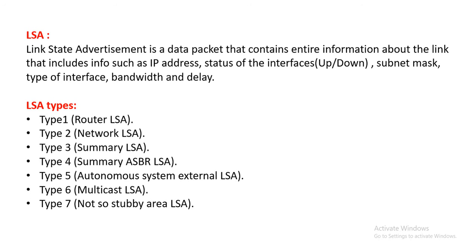LSA stands for Link State Advertisement, which is the means of OSPF routing communication between routers. An LSA contains information about the link such as IP address, interface status, subnet mask, interface type, bandwidth, and delay. OSPF works based on LSA types: Type 1 Router LSA, Type 2 Network LSA, Type 3 Summary LSA, Type 4 Summary ASBR LSA, Type 5 Autonomous System External LSA, Type 6 Multicast LSA, and Type 7 Not-So-Stubby Area LSA. This important topic will be discussed in detail in the upcoming practical session.